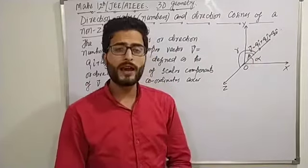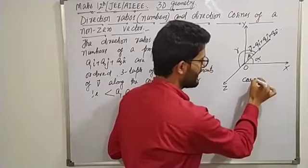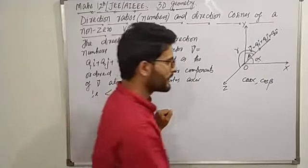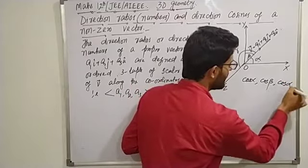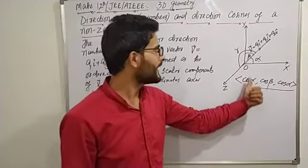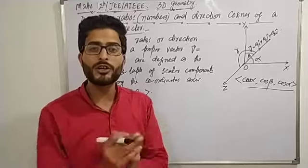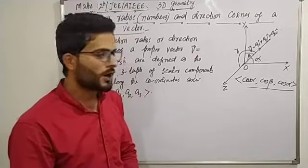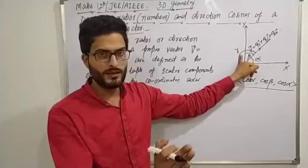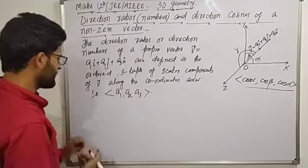The angles which a proper vector V makes with the positive directions of x-axis, y-axis, and z-axis are called its direction angles. And if we operate cosine on these direction angles — cos alpha, cos beta, and cos gamma — and take their ordered three-tuple, that ordered three-tuple of cosines of the direction angles is called the direction cosines of proper vector V.